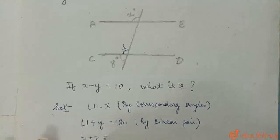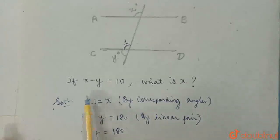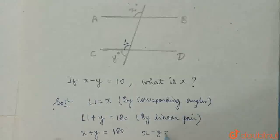So x plus y, putting the value of angle 1 as x, x plus y is 180. And in the question, we are given that x minus y is 10. Now, solving these two linear equations, we can find the value of x.